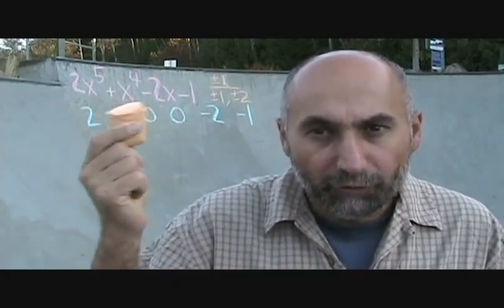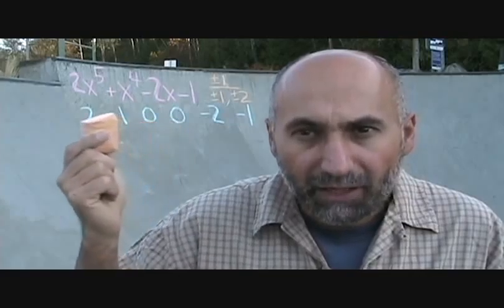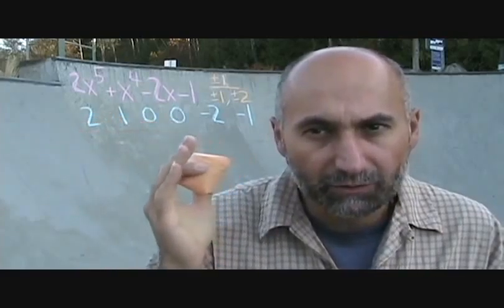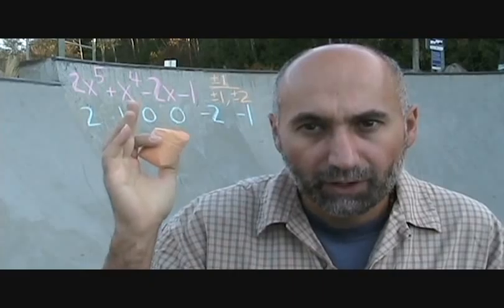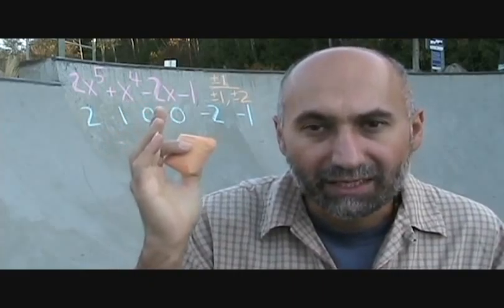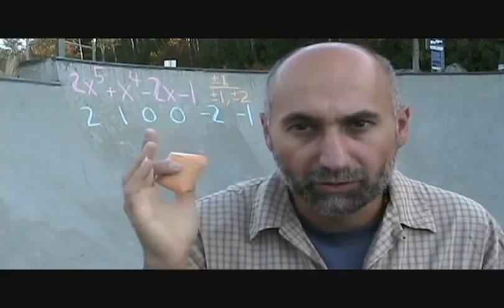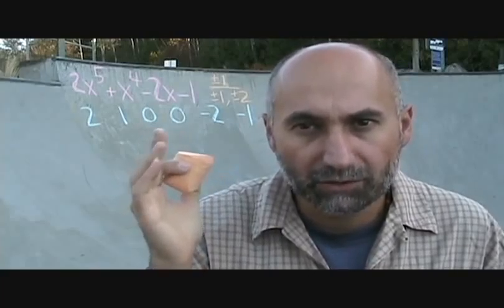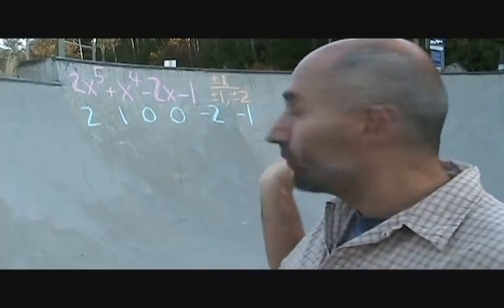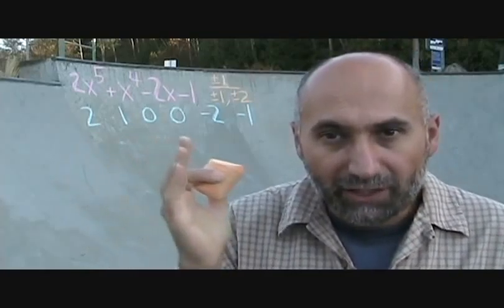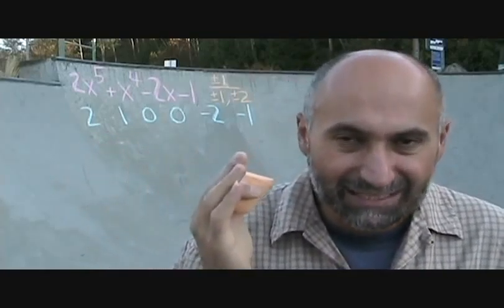For the synthetic division, everything has to be in descending order. That's x to the power of 5, x to the power of 4 — we're missing x cubed and x squared, so we put placeholder zeros for those. We have negative 2 and negative 1, giving us 1, 2, 3, 4, 5, 6 terms in total.